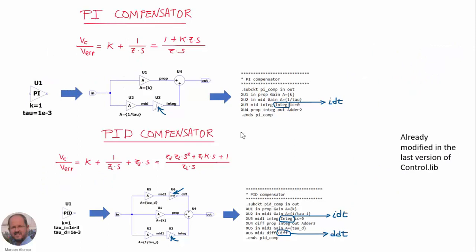Up to now, we have used the integrator and the differentiator only in these two components of our library: the PI compensator and the PID compensator. In the PI compensator, we used the integrator here. If we want to use this new integrator using the IDT function, we only have to substitute here the component corresponding to the integrator — before it was INTEG, now it is going to be IDT. And in the case of the PID compensator, we use this component for the differentiator D over DT and this other for the integrator, so we only have to substitute these two components by IDT and DDT. I have also done this in the new version of our control library, which is available from my website.